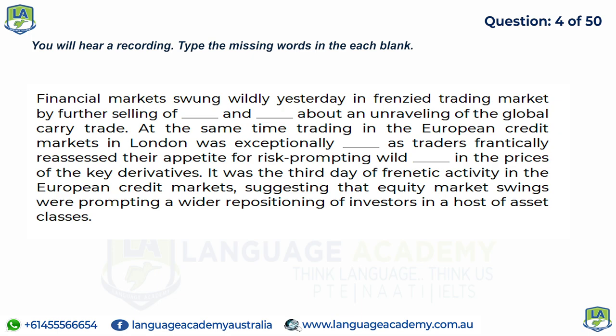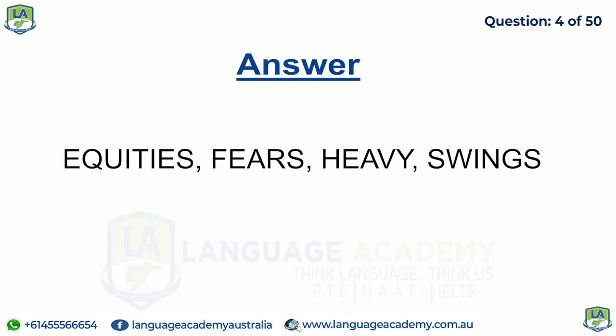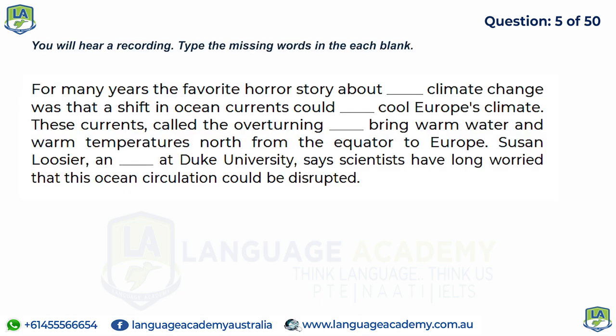For many years, the favorite horror story about abrupt climate change was that a shift in ocean currents could radically cool Europe's climate. These currents, called the overturning circulation, bring warm water and warm temperatures north from the equator to Europe. Susan Lozier, an oceanographer at Duke University, says scientists have long worried that this ocean circulation could be disrupted.